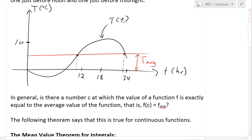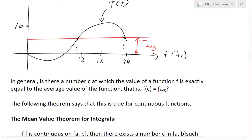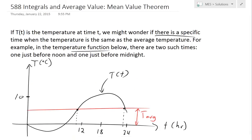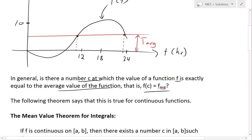Yes, but in general now the question remains, is there a number c such that the value of a function f is exactly equal to the average value of the function? Or in other words, f(c) is equal to f_avg. So this is just an example I did, but is this always the case in general?